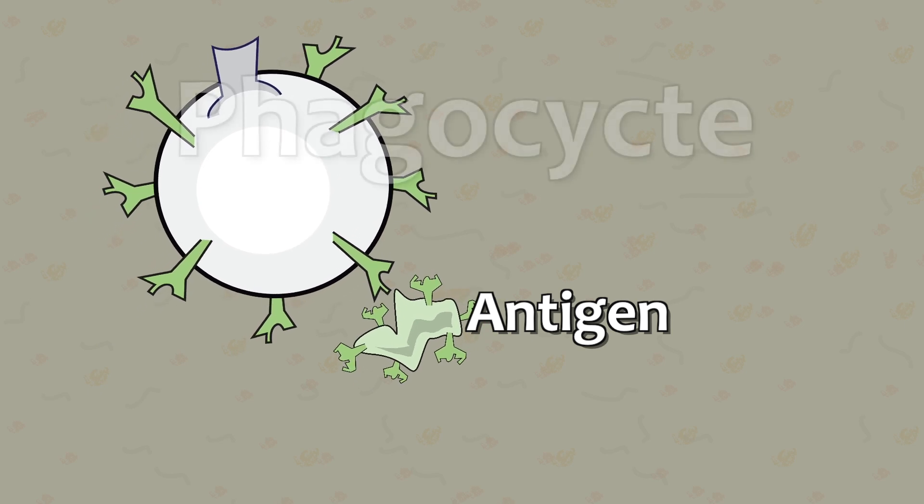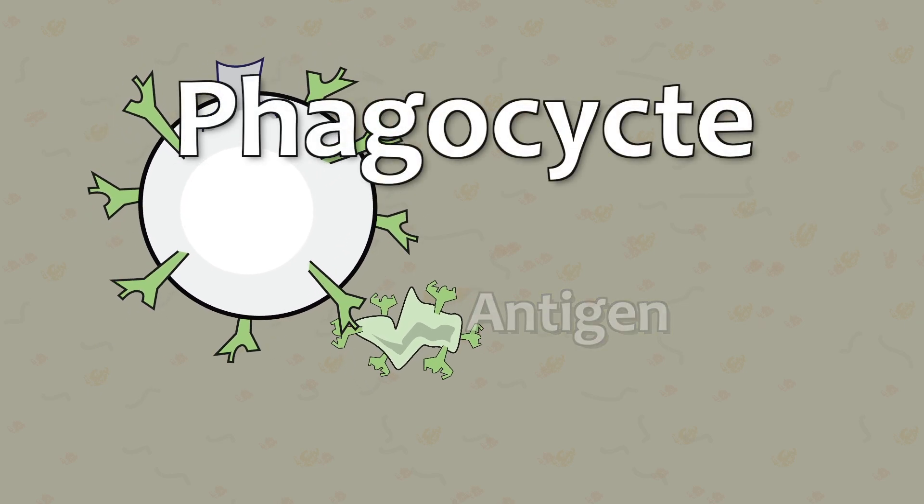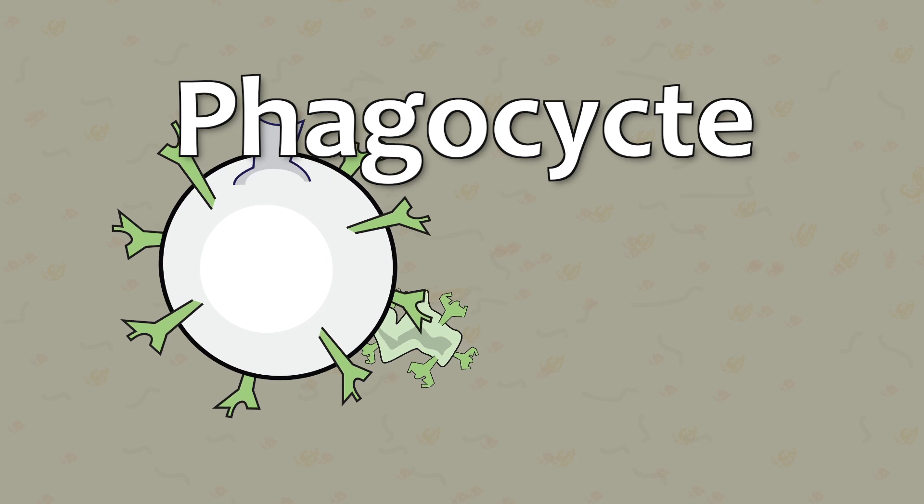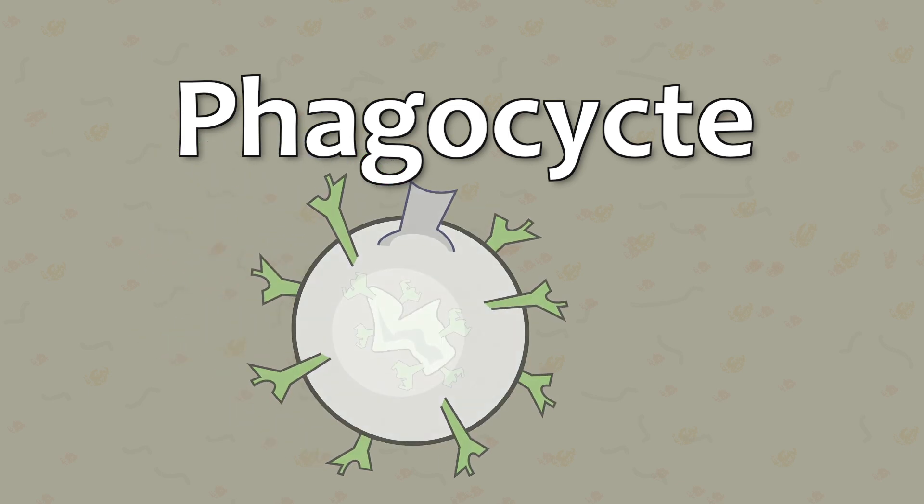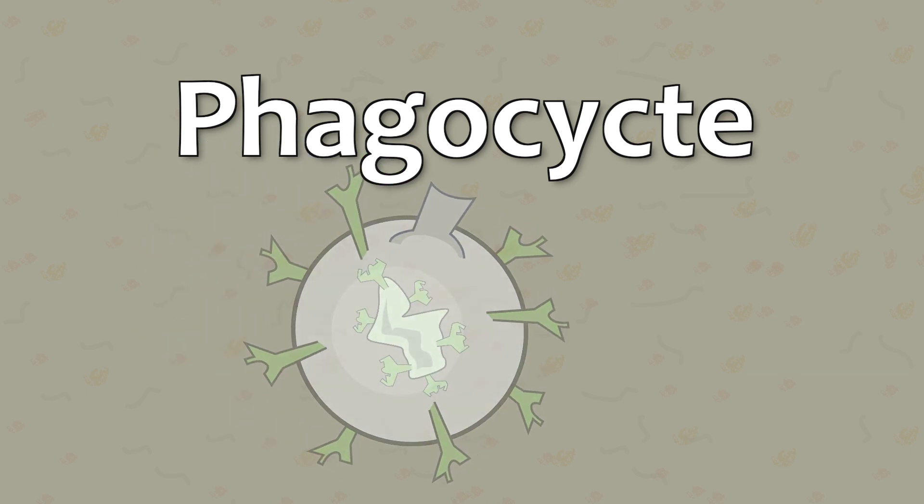Phagocyte is a term that describes different types of white cells that essentially share the same function, which is to absorb and break down harmful antigens or other dead cells in the body.